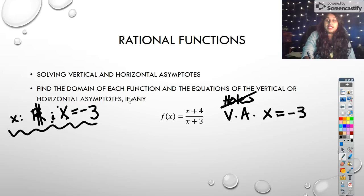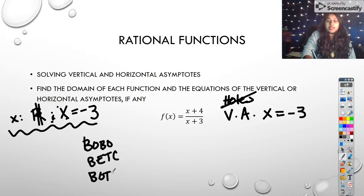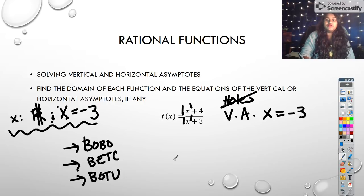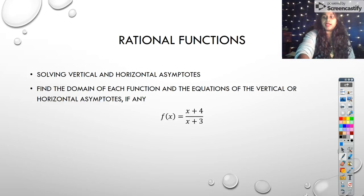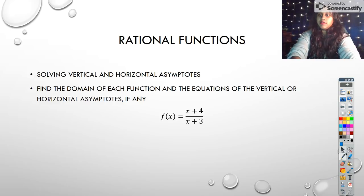So then I want to look for horizontal asymptotes. So I use BOBO, BETCY, and BOTU. I look for the biggest degree of each one. So the biggest degree on top is 1. The biggest degree on bottom is 1. So is it bigger on bottom? No. Is it bigger on top? No. In fact, they both equal. So I look at its coefficient. The coefficient in front of each of these x's is 1. 1 over 1 simplifies to 1. Therefore, there is a horizontal asymptote at y equals 1. I have a few more examples, but I want to come back to you guys with that on our very next video.